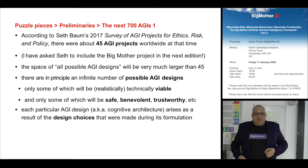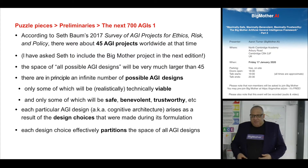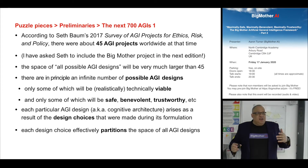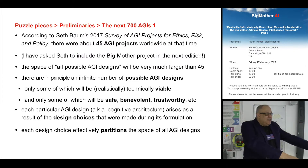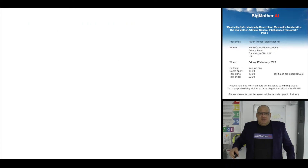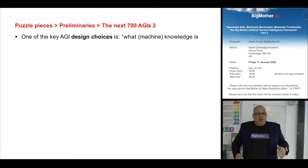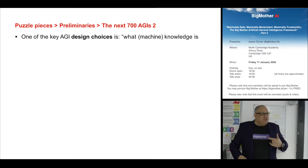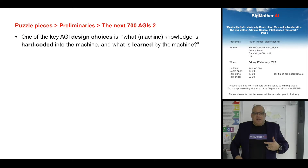When you are designing an AGI you have to make a number of design choices. If you make one particular design choice and you've got three options, that essentially partitions the space of all possible AGI designs — there are AGI designs where you made that choice one way, and AGI designs where you made it another way. I'm going to talk now about a couple of the major design choices that I made.